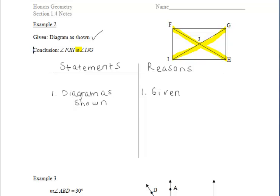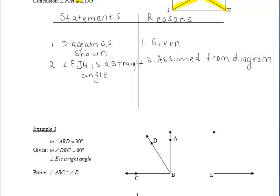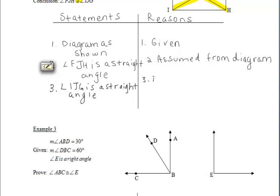Since we're just given the diagram as shown and we look at those angles, we notice that they are straight angles. So we can say that angle FJH is a straight angle. How do we know that? Because straight angles can be assumed from the diagram. Similarly, angle IJG is also a straight angle — again assumed from the diagram, since straight angles are one of the few things we can assume in this class.